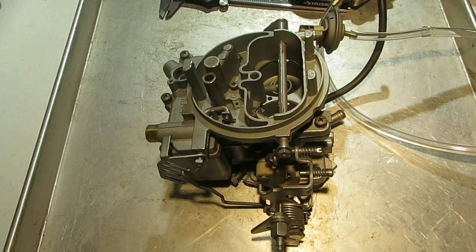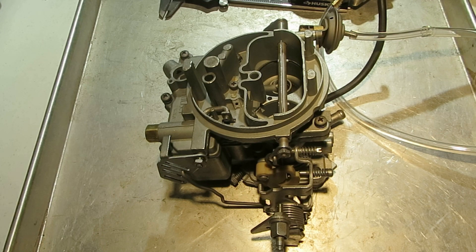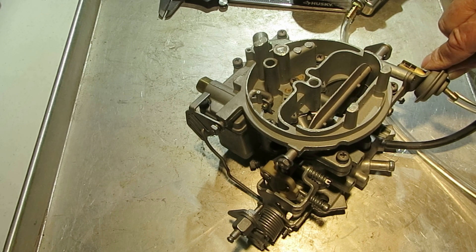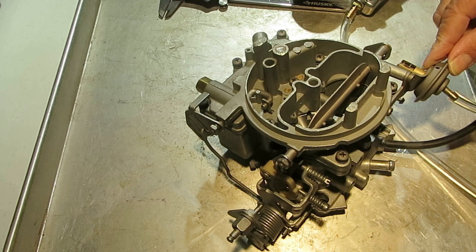Hi, Mike's Carburetor Parts here. I'm going to show you how to adjust the vacuum brake. This is the vacuum brake right here on a Holley 2 barrel 2245 carburetor.